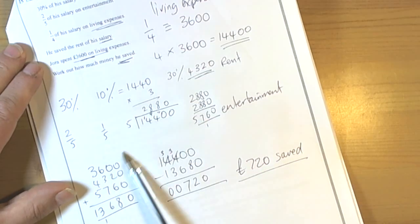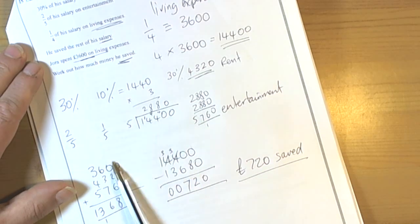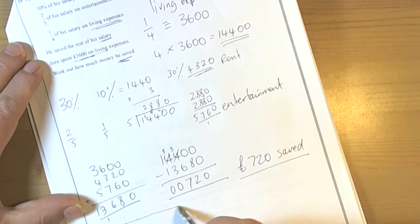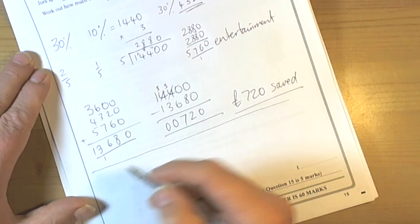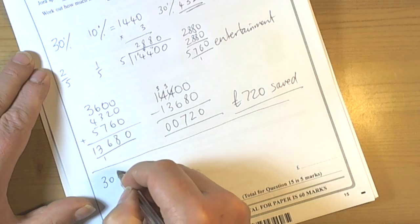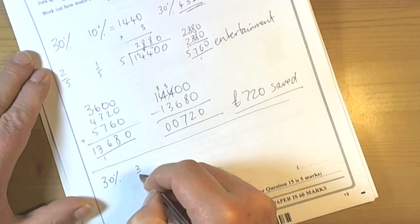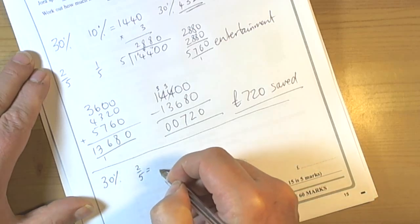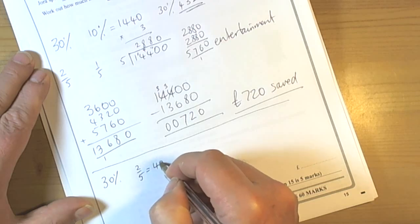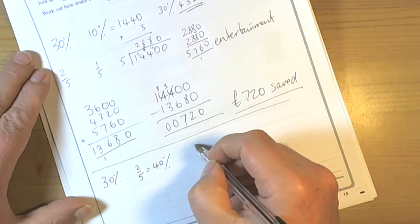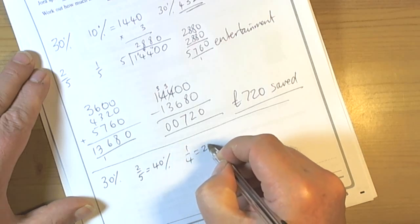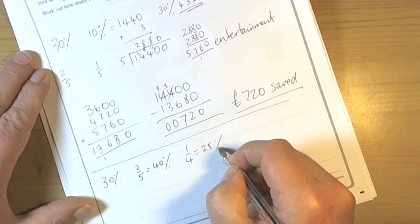Now if we don't particularly want to do all this 30%, 2 fifths and so forth, there is an alternative method for this question. And we could do what percentage is left, because we know that 30% was spent on rent, 2 fifths is the same as 40%, so 40% of his salary was spent on entertainment. We know a quarter is the same as 25%, that was spent on living expenses.